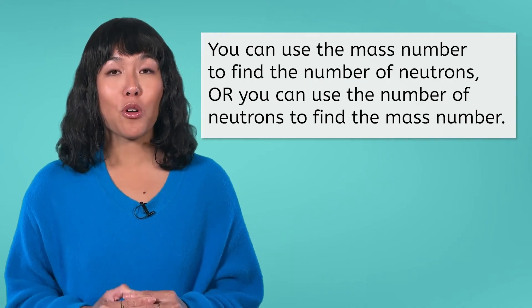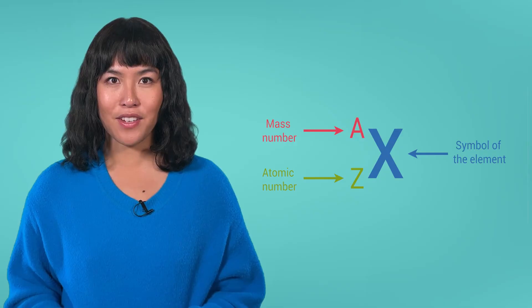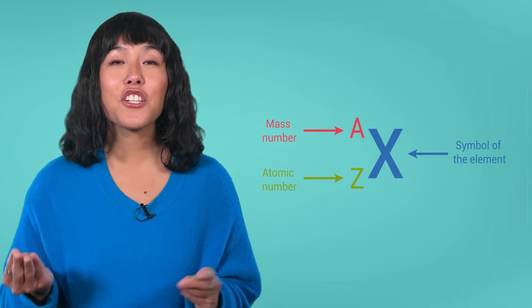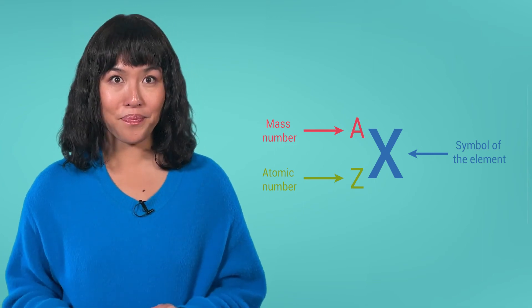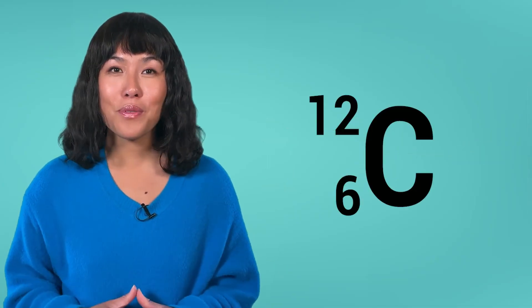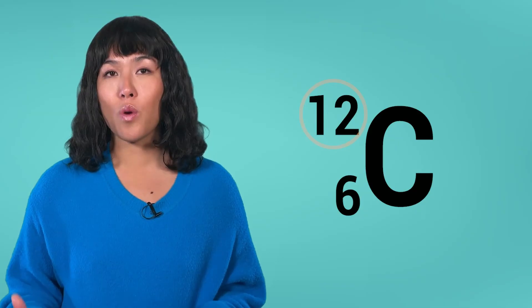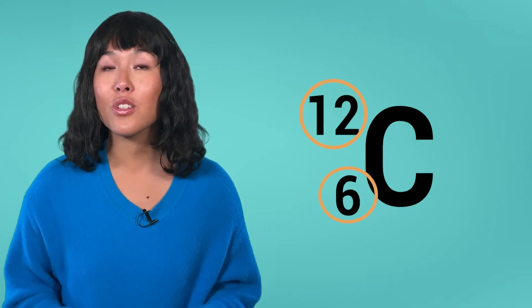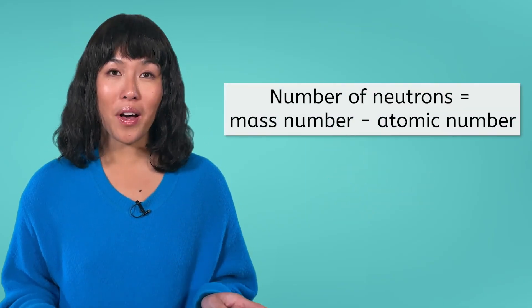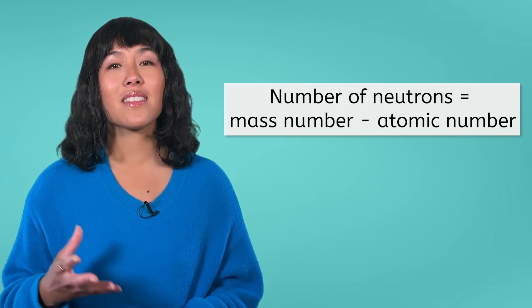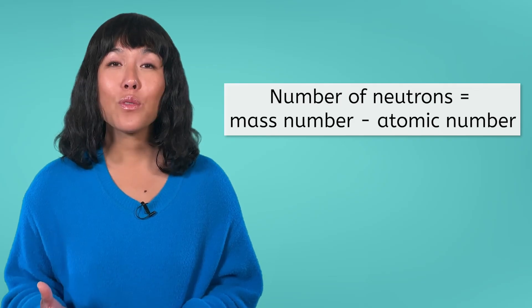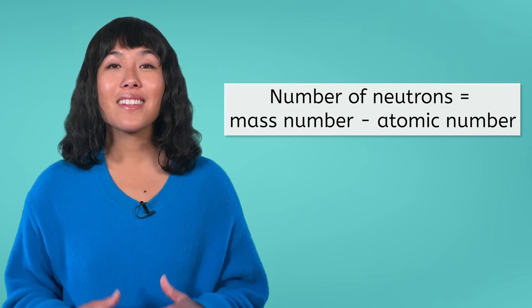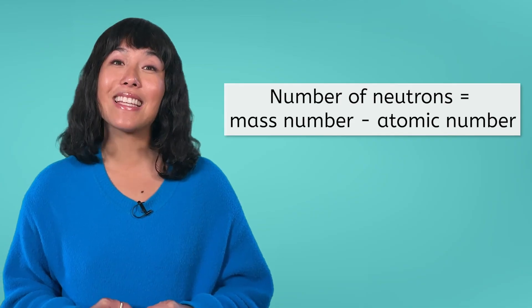One way you can be given the mass number is using the atomic representation. In this representation, the mass number is the top number and the atomic number is the bottom number. For example, in this representation of carbon, the mass number is 12 and the atomic number is 6. Using this information, we can determine that there are 6 neutrons, because the mass number, 12, minus the number of protons, also known as the atomic number, 6, equals the number of neutrons, 6. You will have more practice with determining the mass number and the number of subatomic particles in the lesson PDF.